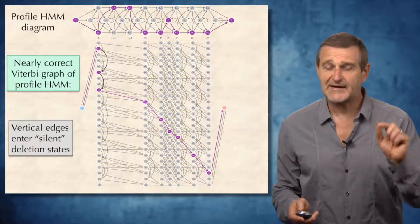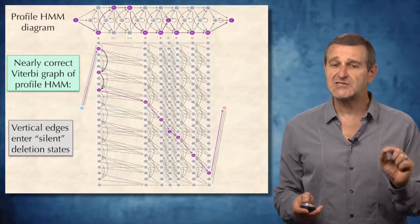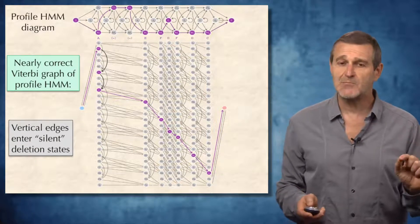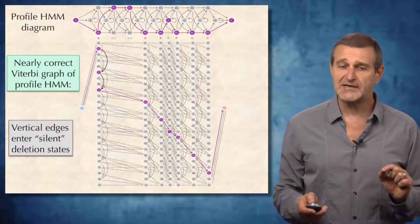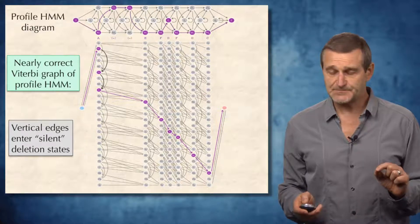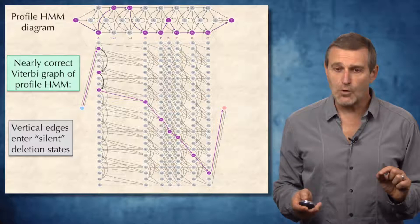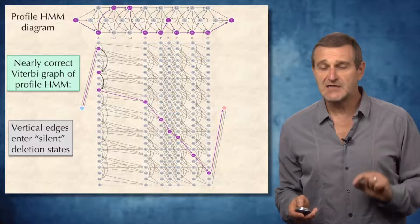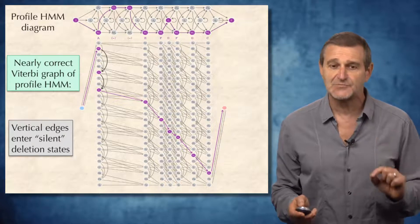But here is the correctly constructed Viterbi graph. Every time we move to the deletion state and do not emit a symbol, we actually transform the edge into a vertical edge within the same column. In this case, the number of columns in the Viterbi graph is equal to the number of emitted symbols, and the Viterbi graph is then well defined.